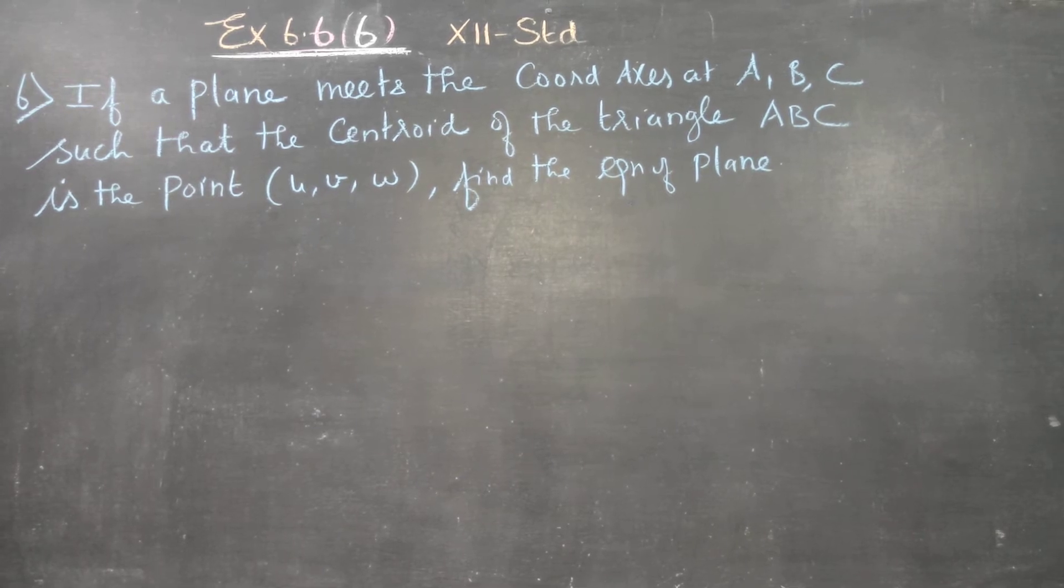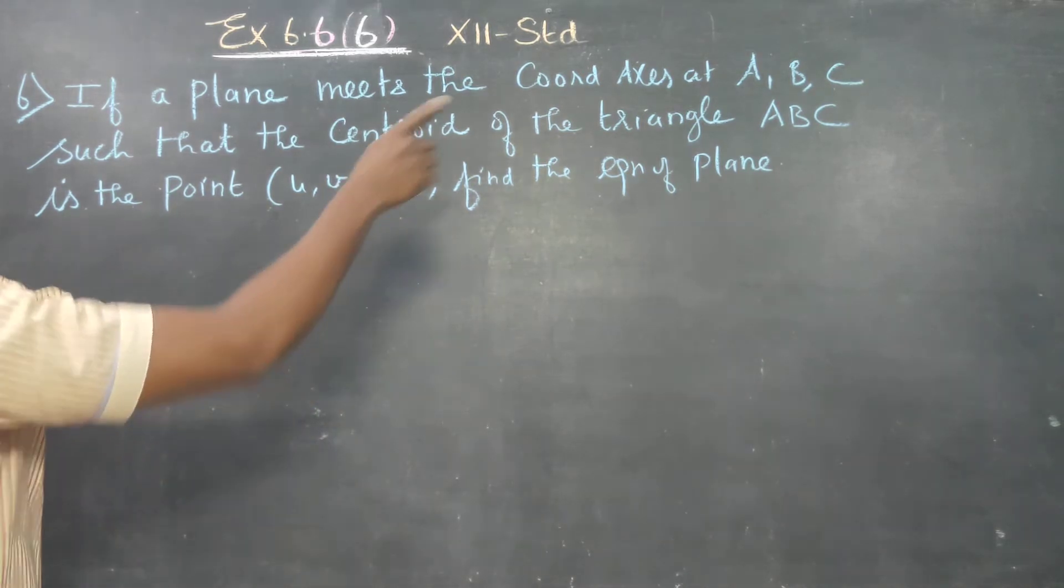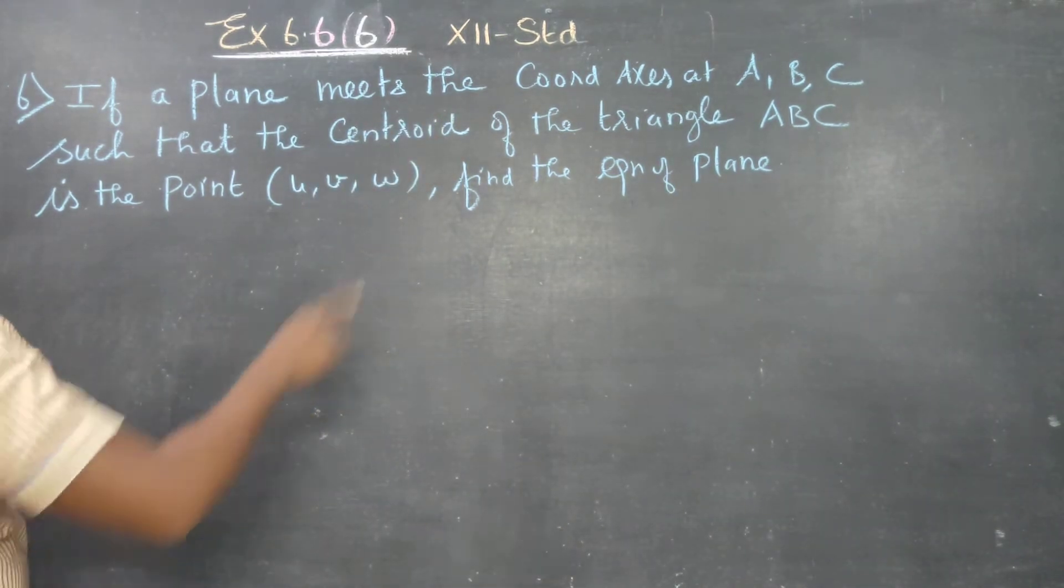Dear 12 standard students, in exercise number 6.6.162, if a plane meets the coordinate axes at A, B, C such that the centroid of the triangle ABC is the point (u, v, w), find the equation of the plane.